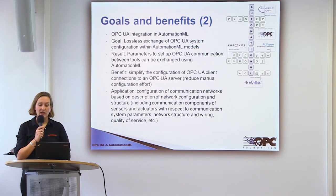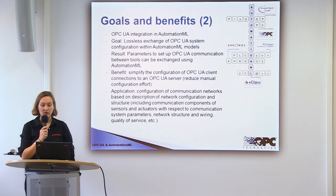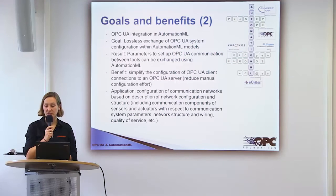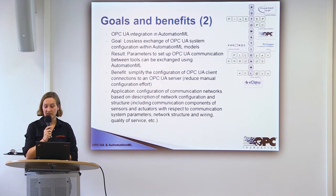On the other hand, we have the OPC UA integration in AutomationML. That means we want to exchange the OPC UA system configuration using AutomationML models. The result is that we have the parameters to set up OPC UA communication between tools, and these parameters can be exchanged using AutomationML. The benefit is to simplify the configuration of OPC UA client connections to an OPC UA server and reduce the manual configuration effort.